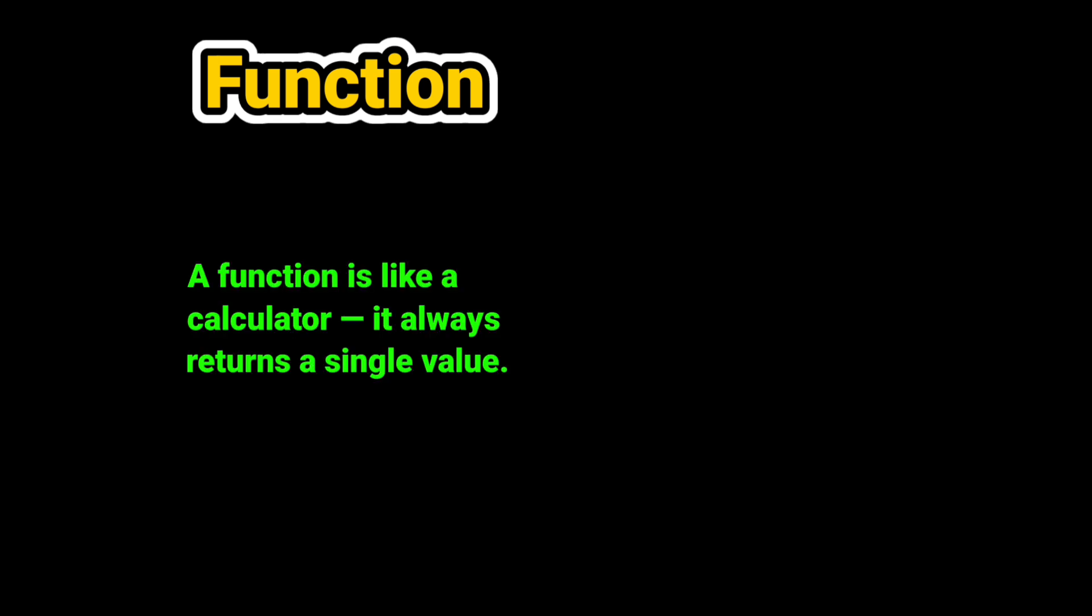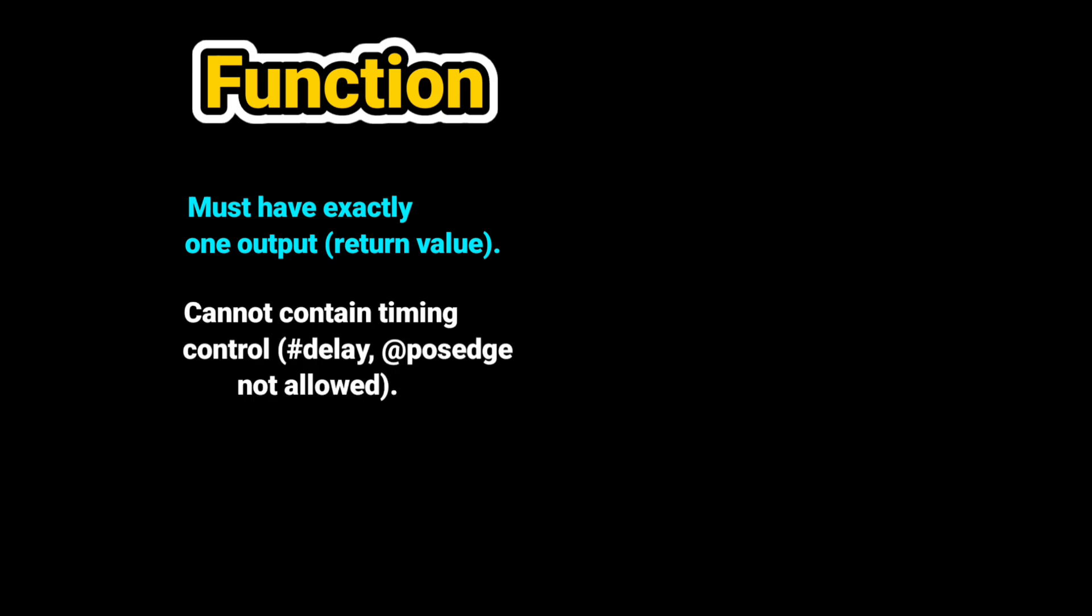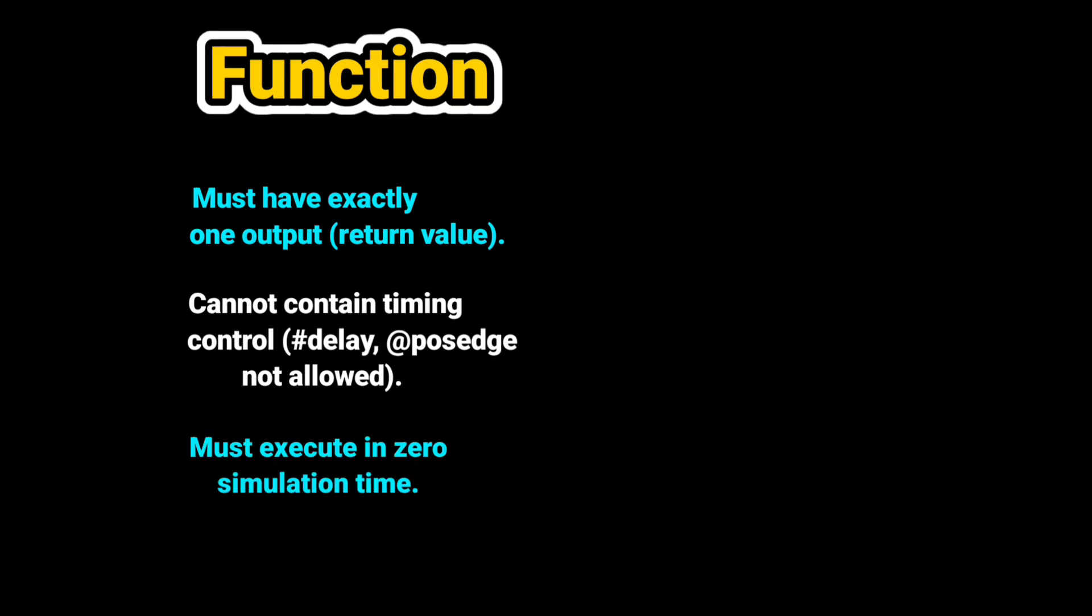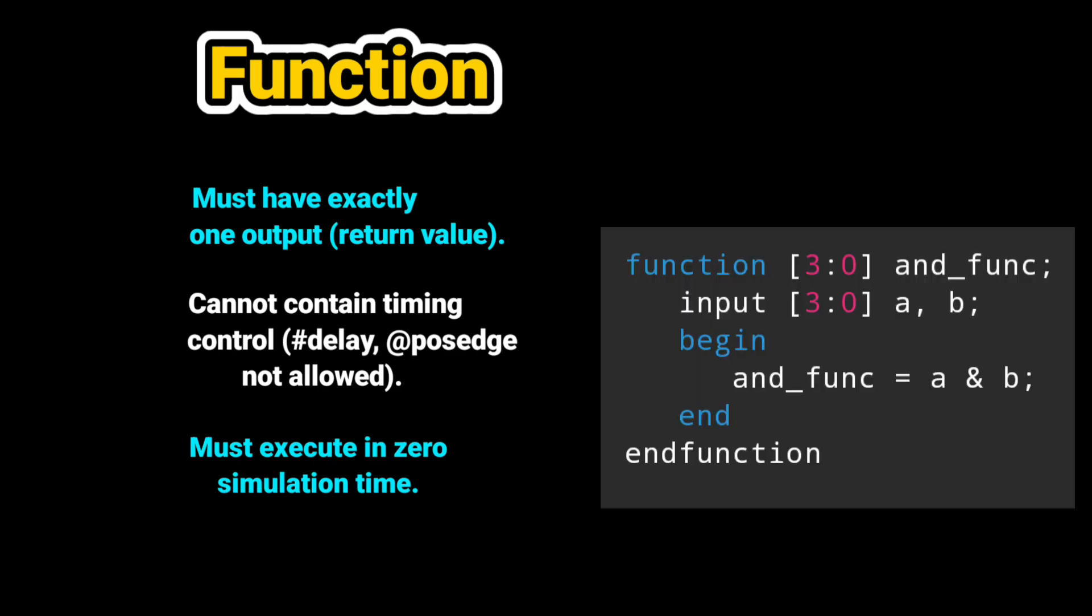Now the second one is function in Verilog. A function is like a calculator. It always returns a single value. Rules for functions: It must have exactly one output, return value. It cannot contain timing control, hash delay, @(posedge) not allowed. It must execute in zero simulation time. Here the example is given in which function performs bitwise and operations and directly returns the result.